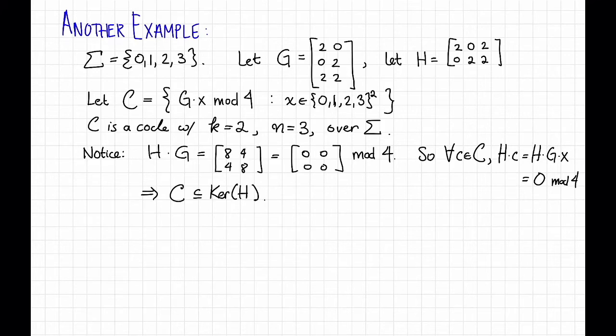This implies as before that C is contained in the kernel of H. Okay, so now we have a code C over an alphabet of size 4 with this generator matrix and this parity check matrix. But something is a little bit funny.